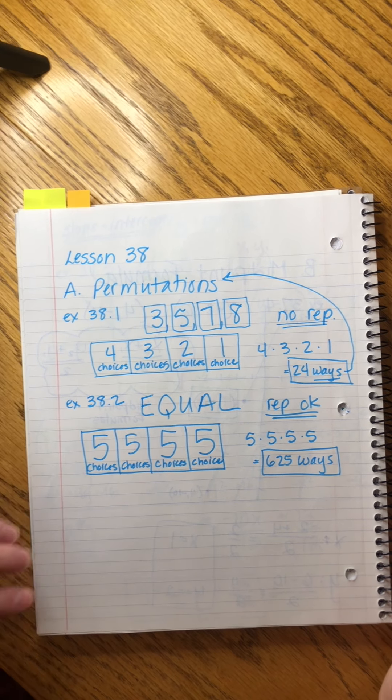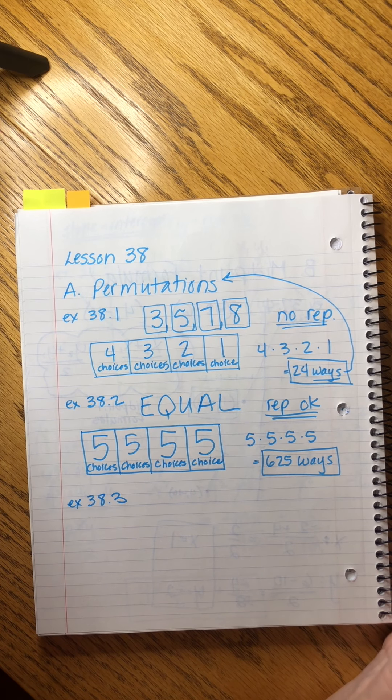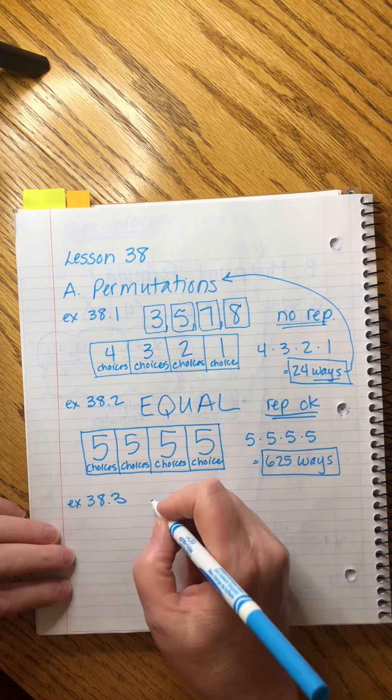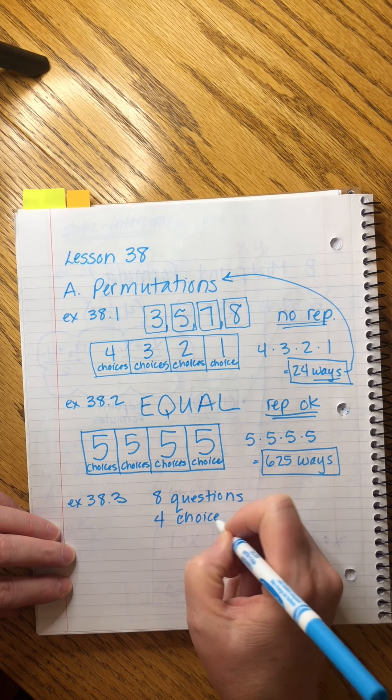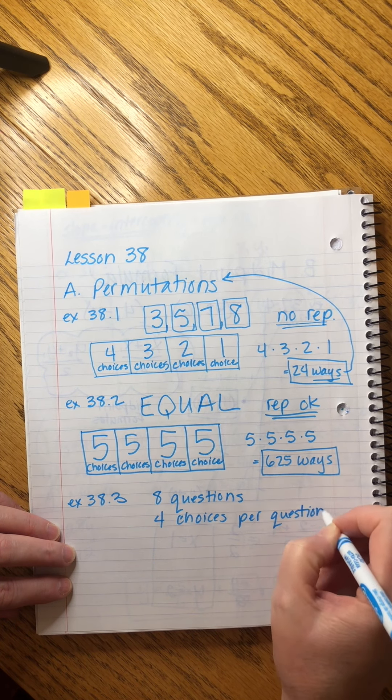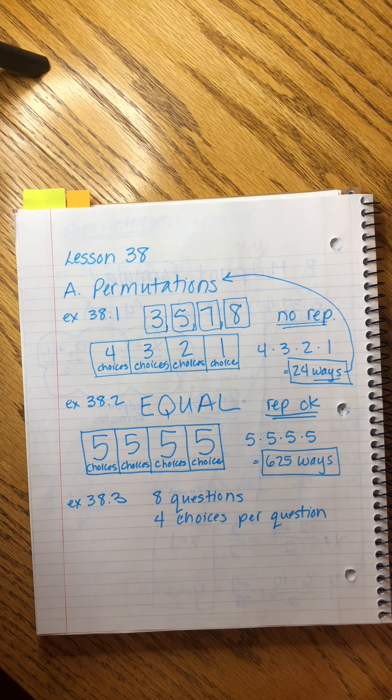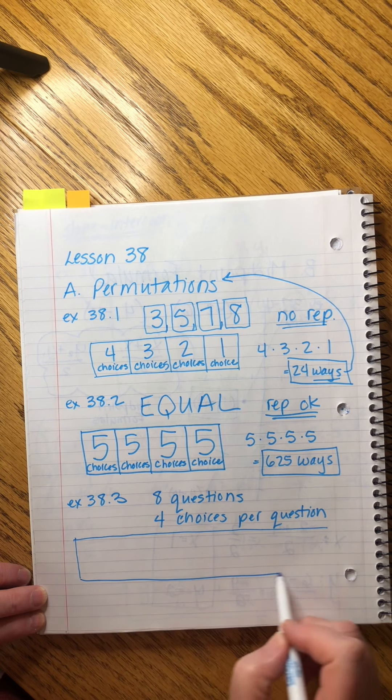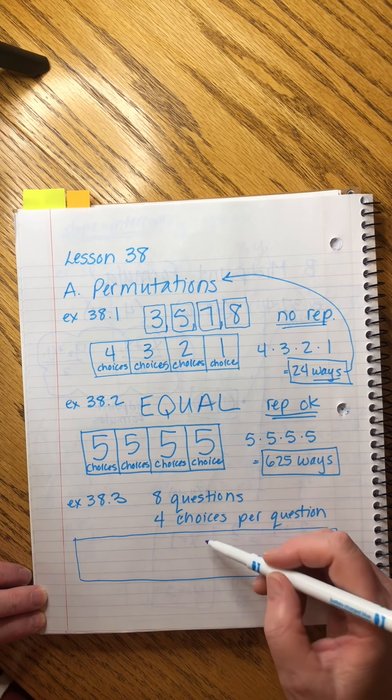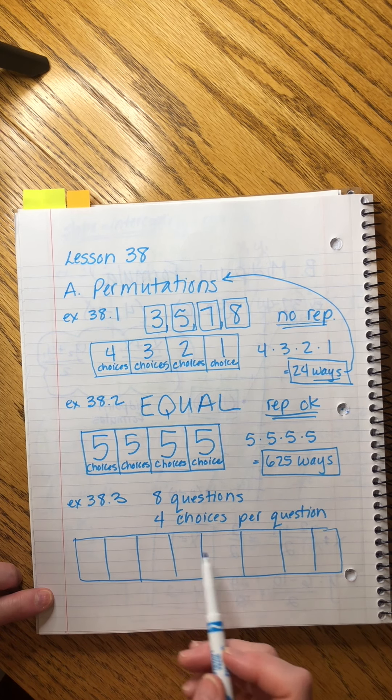Okay. 38.3. This is a fun one. A multiple choice test has eight questions and there are four possible choices to each. Eight questions, four choices per question. Right? That makes sense because most multiple choice tests have like A, B, C, and D. Where am I? There it is. How many different sets of answers are possible? Cool. Okay. So what we can do is we can draw out the eight questions, right? The questions are kind of like the tray. The test is like the tray. The questions are the individual boxes. And in each box, we, the test taker, one, two, three, four, five, six, seven, eight. Okay.